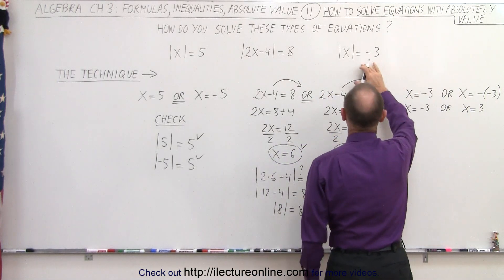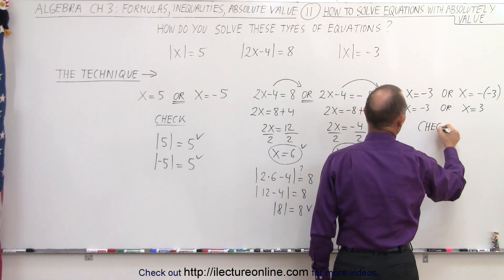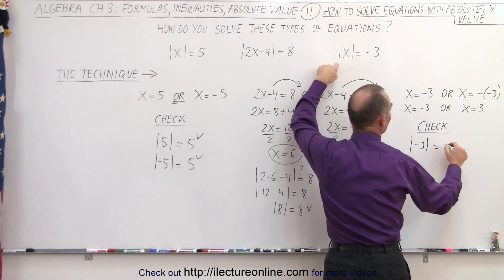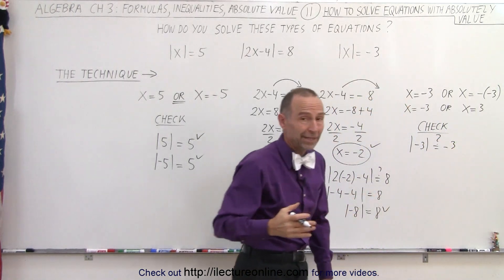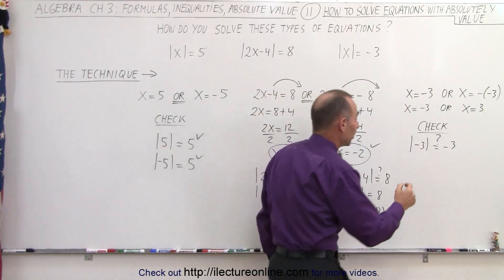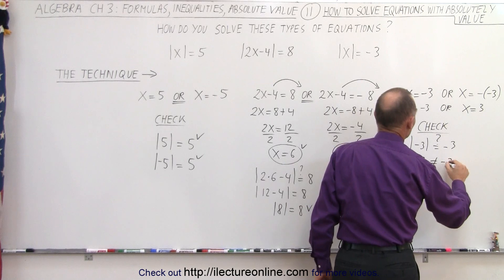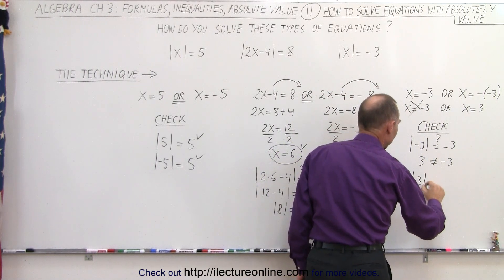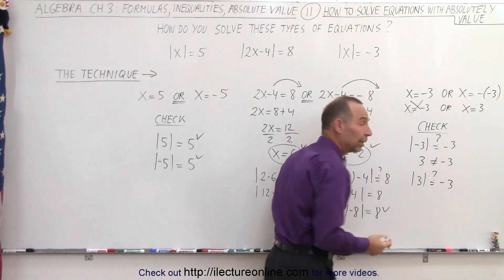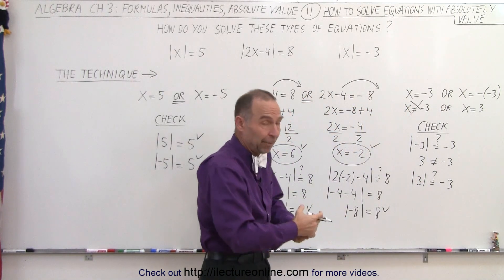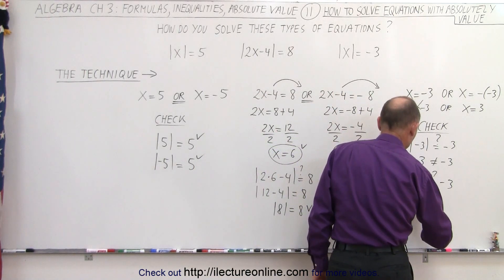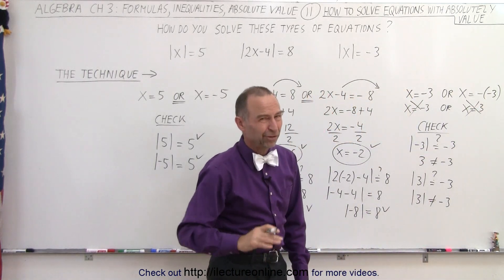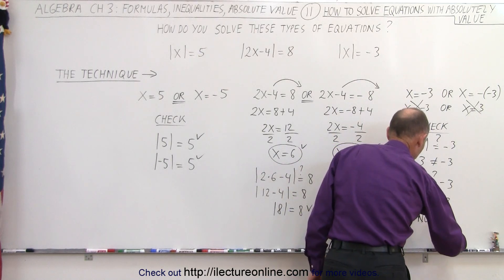We'll plug these two values in to check. The absolute value of negative 3 — is that equal to negative 3? We already know that when we take the absolute value of a negative number, we get a positive number. So 3 does not equal negative 3; this is not a possible solution. Let's try the other one: the absolute value of positive 3 — is that equal to negative 3? Again, the absolute value gives a positive value, so it's not equal. The absolute value of 3 is not equal to negative 3. Therefore, this is also not a solution. There's no solution to that third equation.